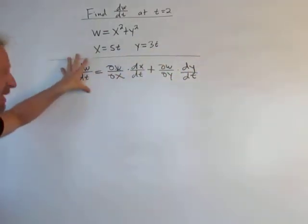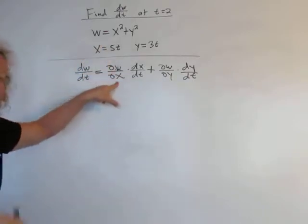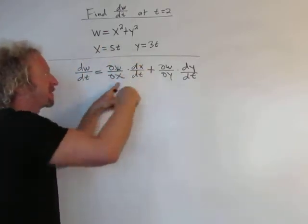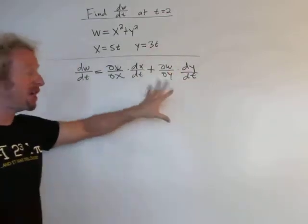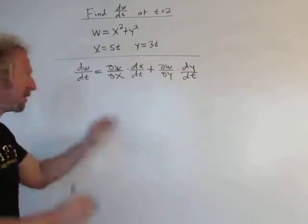So when you're finding dw dt, it's the partial with respect to x times the derivative of the inside function, plus the partial with respect to y times the derivative of the inside function. There's an easier way to do this, and we'll do it in a minute, but let's finish this way.